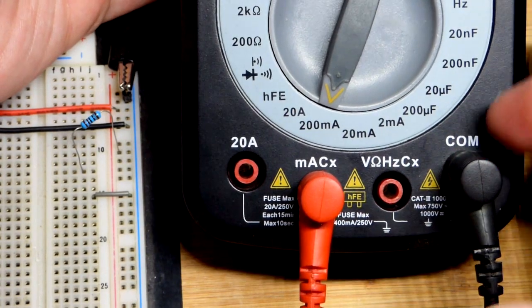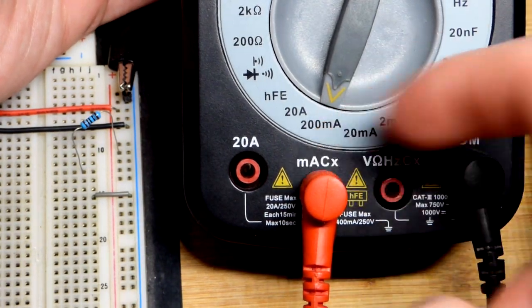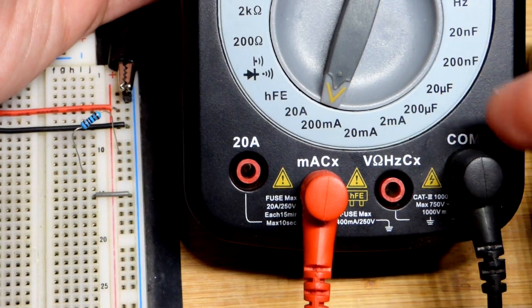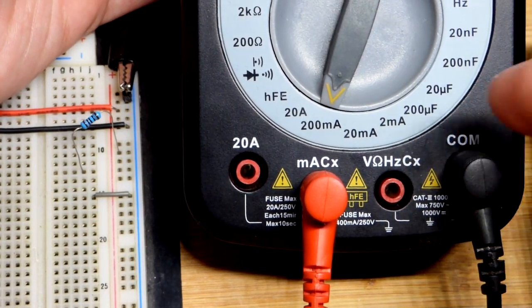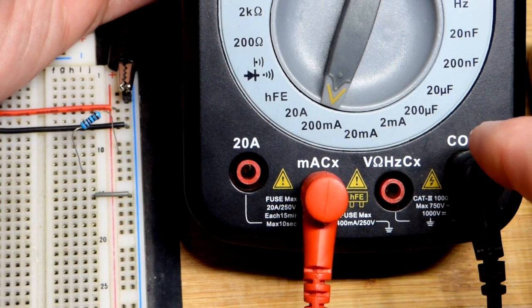There's also the C there. That's actually where the black probe goes when you're measuring capacitance, whereas red goes there. For measuring current, we leave the black probe in COM right there.